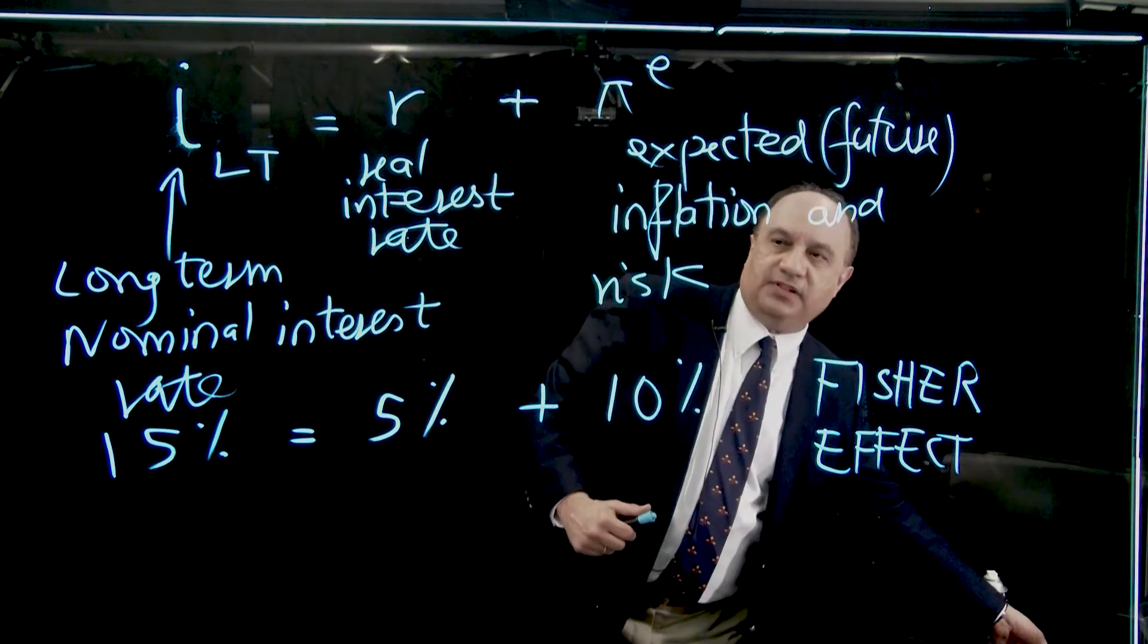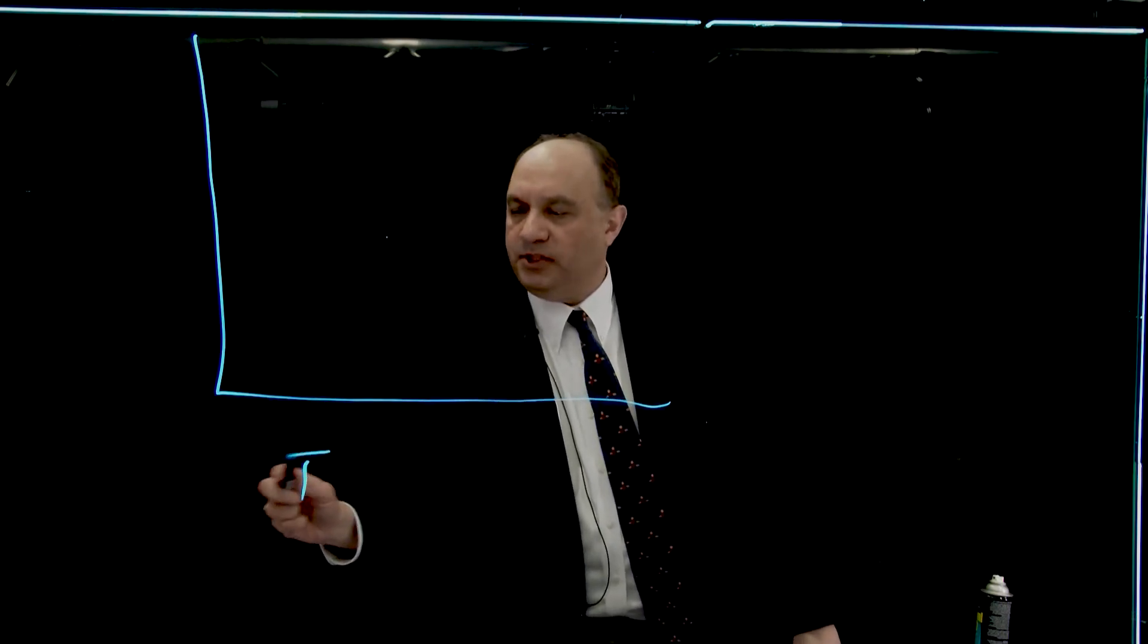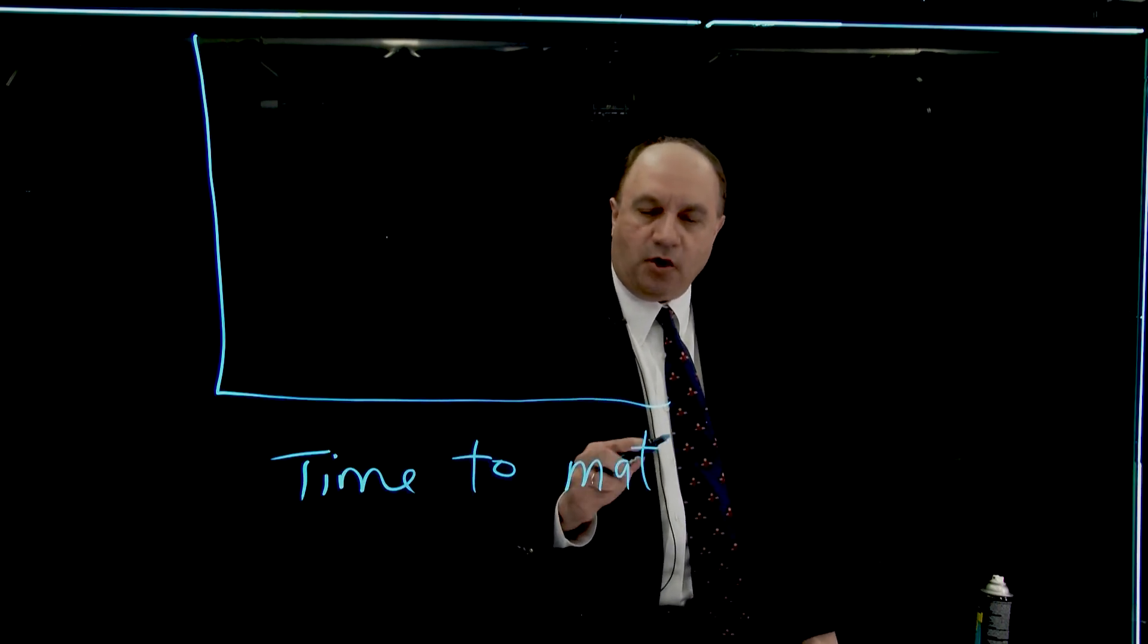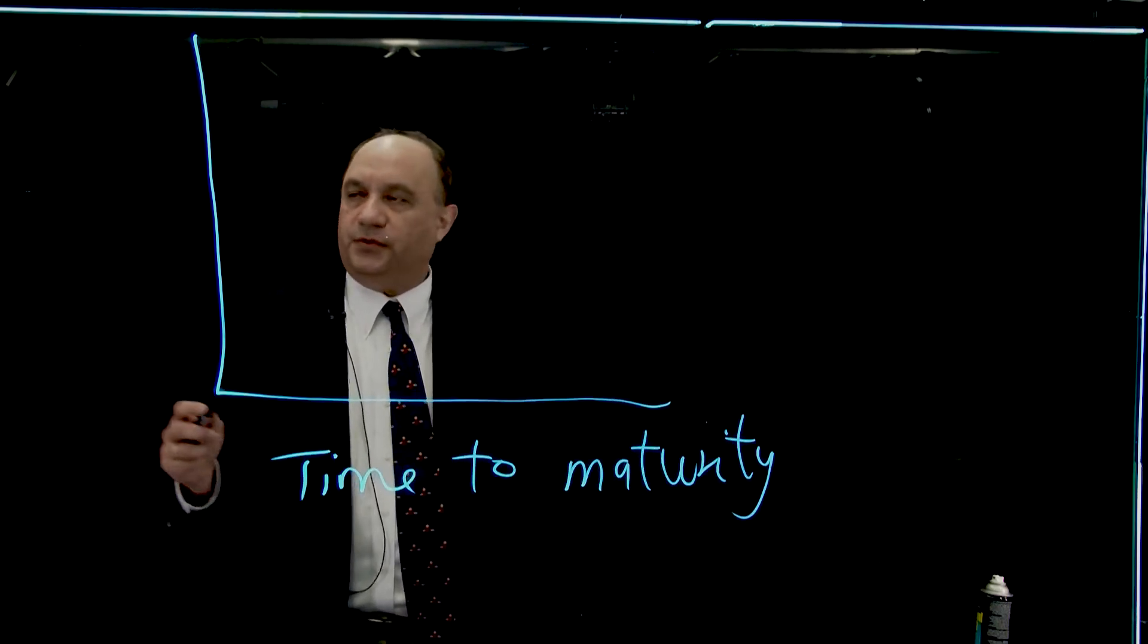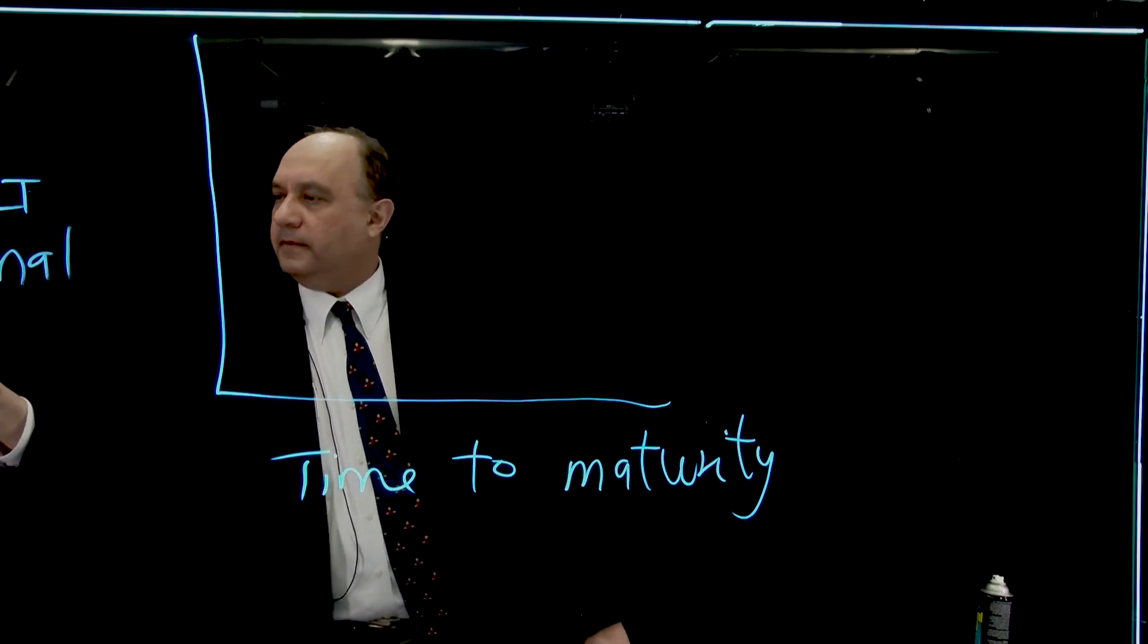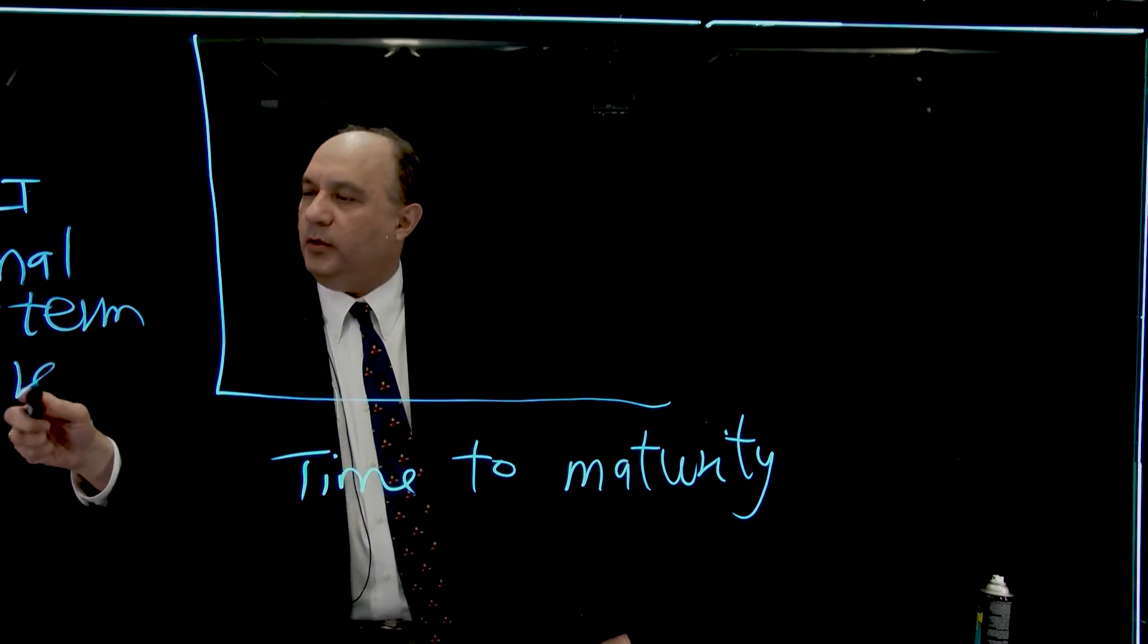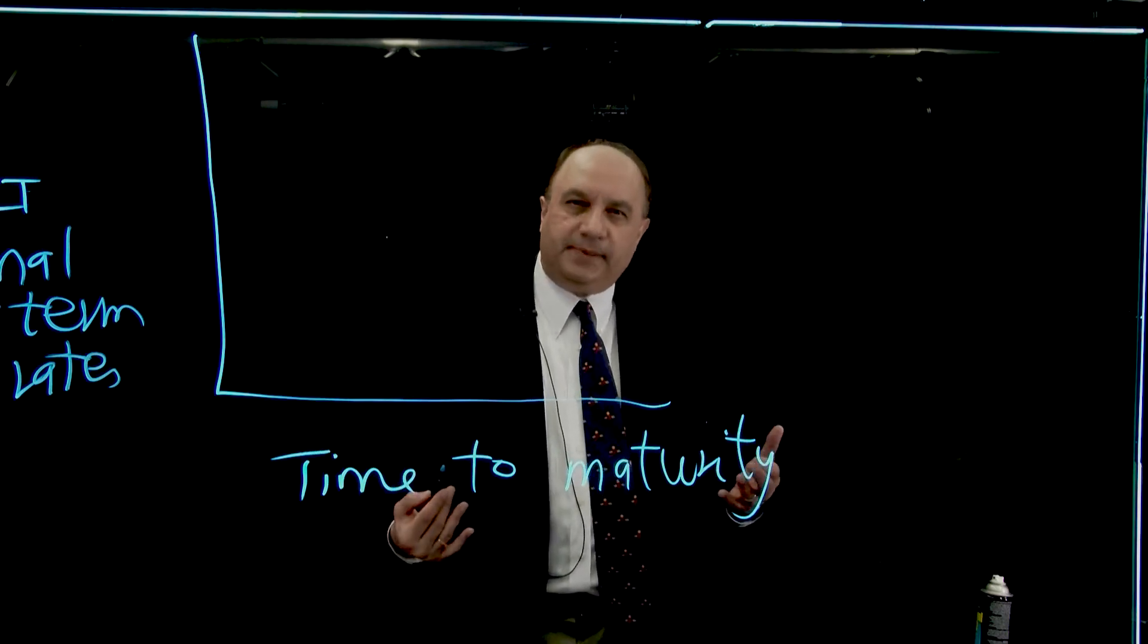Now let me just show you something called the yield curve here. This is the Treasury yield curve. We've just discussed the Fisher effect. This is time to maturity. And so all of you folks who are in the mortgage market, who are thinking of locking in your mortgages, this is going to be particularly important for you. And this is ILT. These are the nominal long-term interest rates. This is time to maturity. This is government debt. So Treasury bills, Treasury bonds.